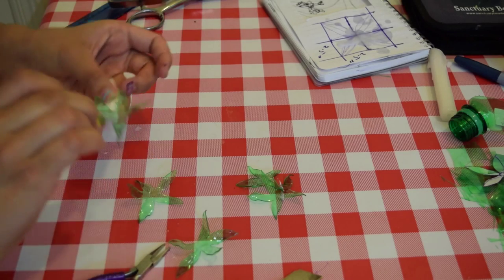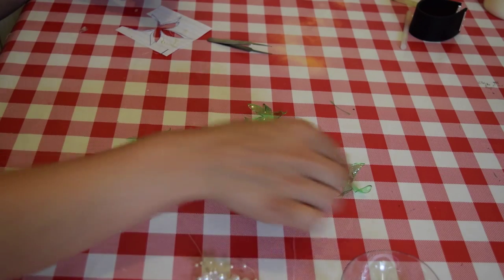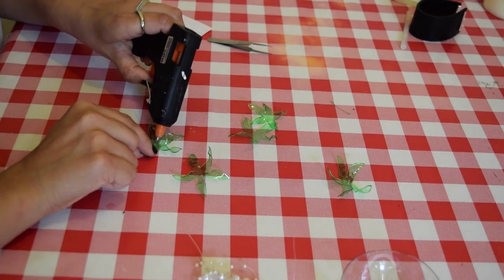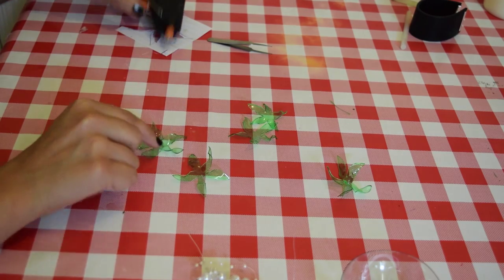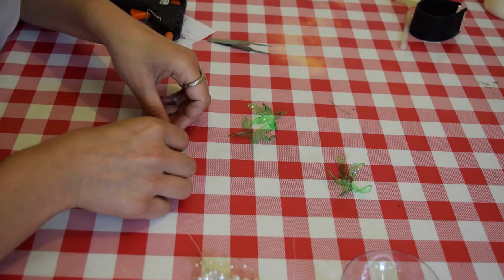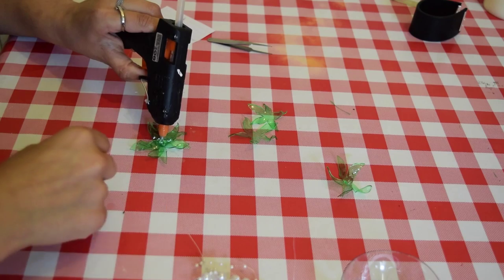Then take a large petal and apply hot glue in its center and stick the second large petal by crossing the first one. Then apply the hot glue with the glue gun again and stick the third large petal.